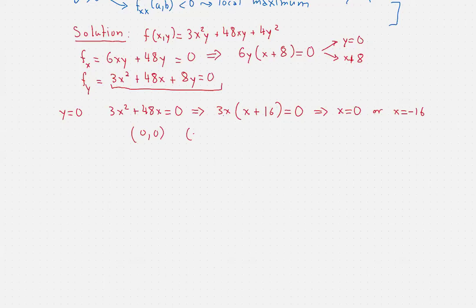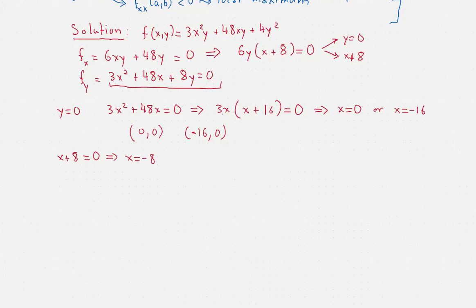Let's consider the case that x plus eight equals zero, which means x equals negative eight. Let's plug it into the second equation where we can find y immediately. I have 3 times (-8)² which is the same as 8², plus 48 times (-8) plus 8y equals zero.